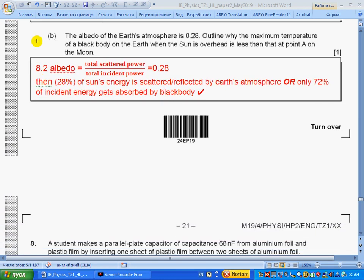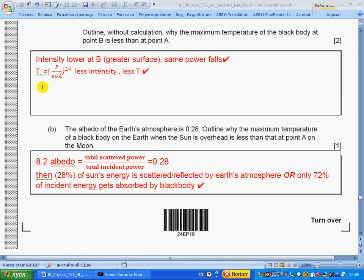Part b: The albedo of the Earth's atmosphere is 0.28. Outline why the maximum temperature of a black body on Earth when the sun is overhead is less than that at point A on the moon. Section 8.2: albedo tells us how much is scattered—the fraction scattered. 28% means that only 72% is incident on Earth. As a result, the temperature will be less because less power falls means less temperature.